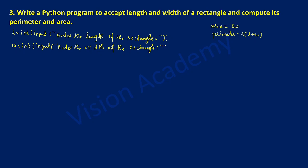End the double quotation mark and close the bracket. Now we are going to calculate the area of the rectangle using l times w. So here I am going to write: area = l * w, where the asterisk symbol represents multiplication.